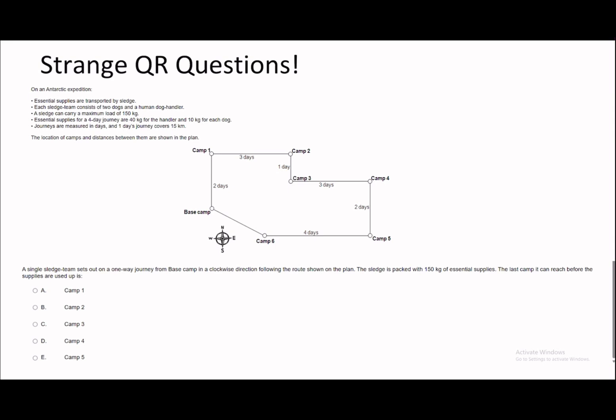On to the next question then. So a single sledge team sets up on a one-way journey from base camp in a clockwise direction following the route. The sledge is packed with 150 kg of essential supplies. The last camp it can reach before the supplies are used up. So a single sledge team is two dogs and a human dog handler. It says each sledge carries a maximum load of 150. Essential supplies for a four-day journey are this amount. So for a four-day journey, we need 40 kg for the handler because the single sledge team is two dogs and a handler, as well as 20 kg for the dogs, because we have two dogs.